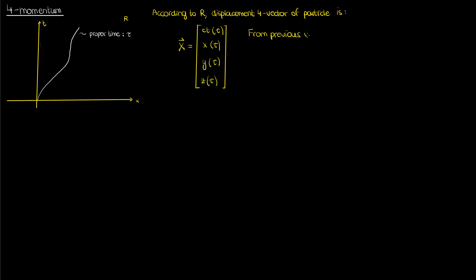Where each of these components is a function of τ. We know from my previous video that the four-velocity corresponding to this displacement four-vector of the particle is the derivative of x with respect to proper time, and we know that this four-velocity is given by the following expression, where γ_v is the Lorentz factor with v² in the square root term, where v² the magnitude squared of the particle's three-velocity in the reference frame R was the sum of squares of dx/dt, dy/dt, and dz/dt.